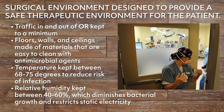The surgical environment is designed to provide a safe therapeutic environment for the patient. Traffic in and out of the operating suite is kept to a minimum to decrease potential contamination from air turbulence and bacterial shedding. Floors, walls, and ceilings are made of materials that are easy to clean with antimicrobial agents. The temperature in the OR is kept between 68 and 75 degrees to reduce the risk of infection, and the relative humidity is kept between 40 to 60 percent, which diminishes bacterial growth and restricts static electricity.